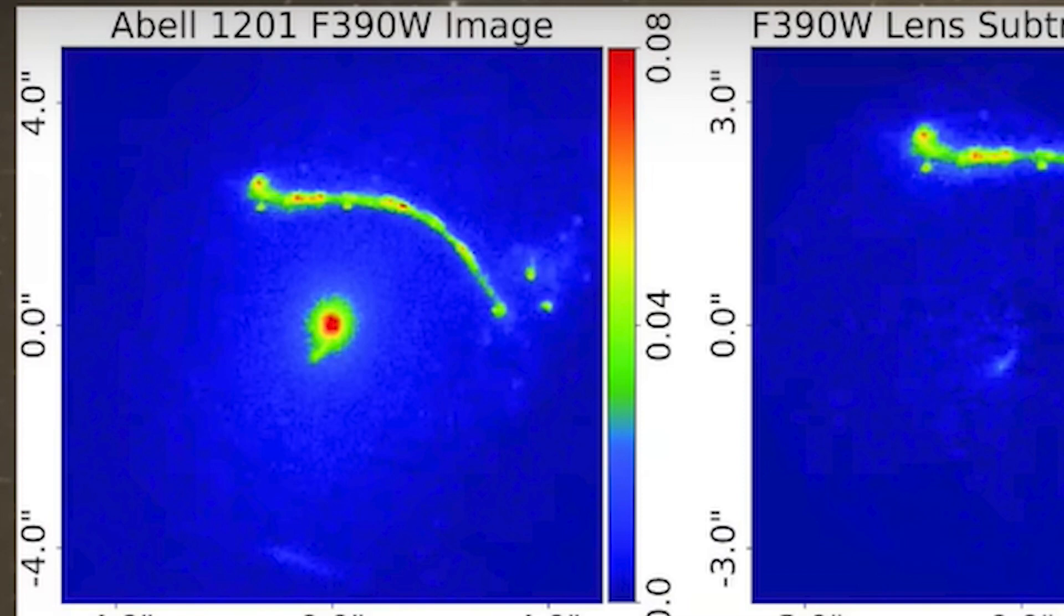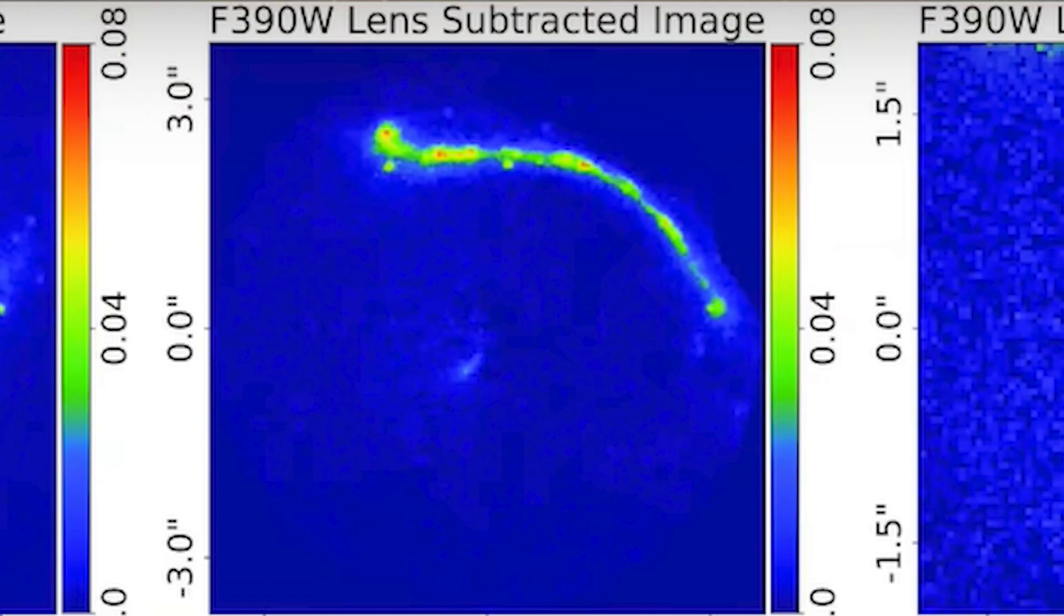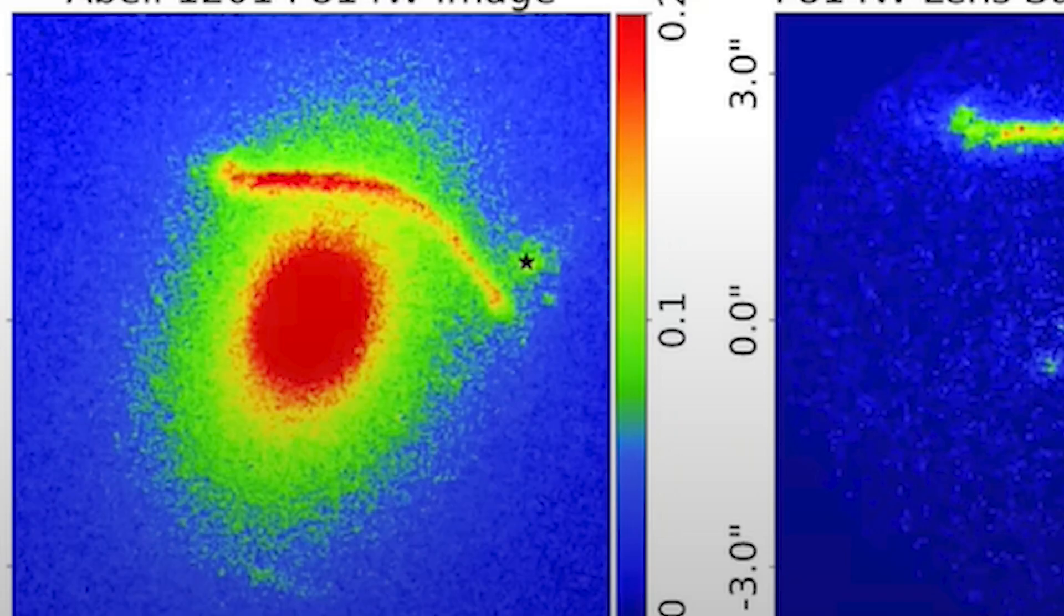Two. The second thing to observe is the giant arc at the top. This arc is the distorted image of the background galaxy. Three. And third. There is a small arc of the same background galaxy, known as the counter-image.